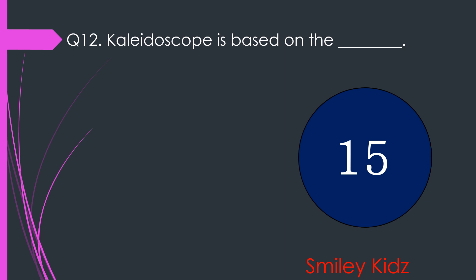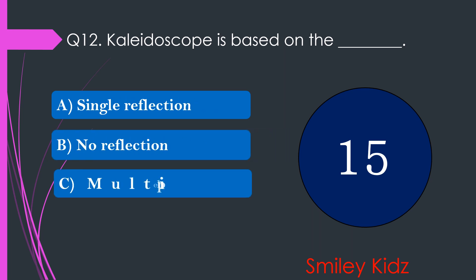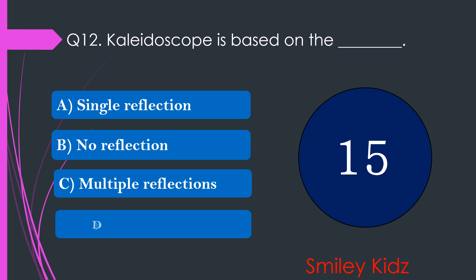Question number 12. The kaleidoscope is based on the dash. The options are A. Single reflection, B. No reflection, C. Multiple reflections, or D. None of these. Time starts now.